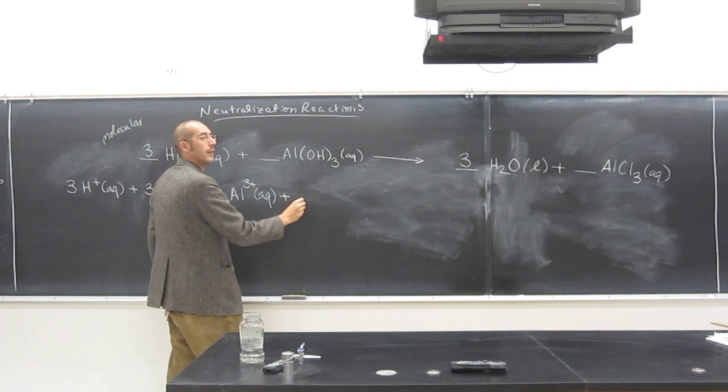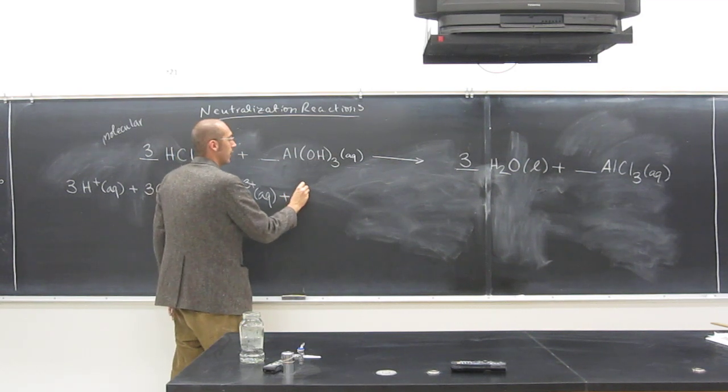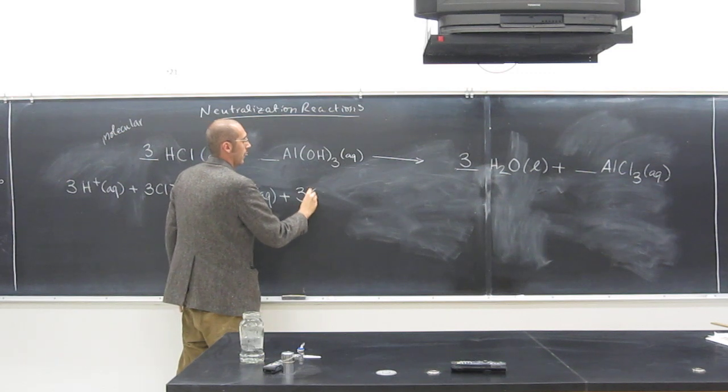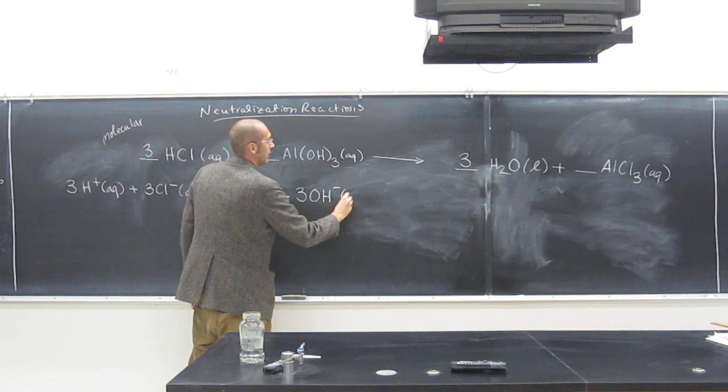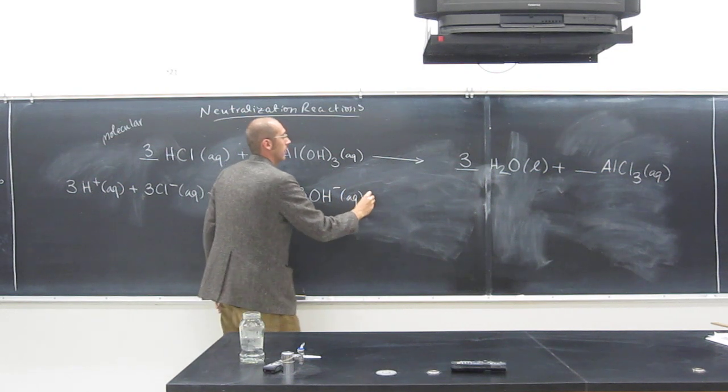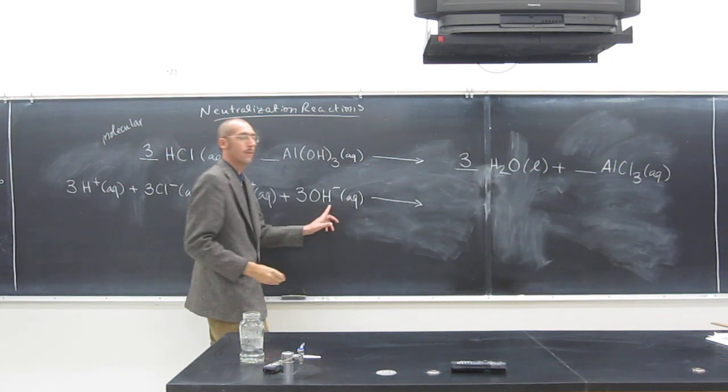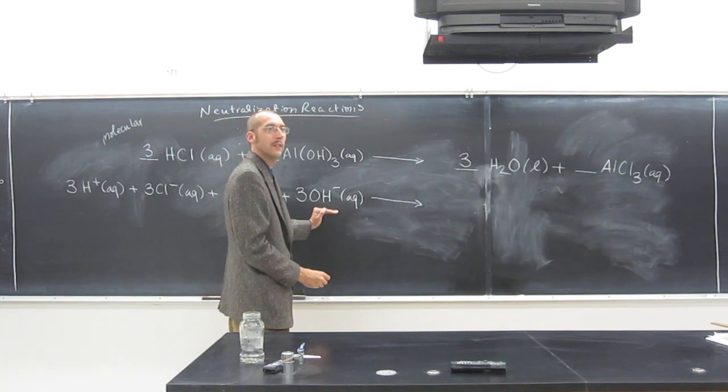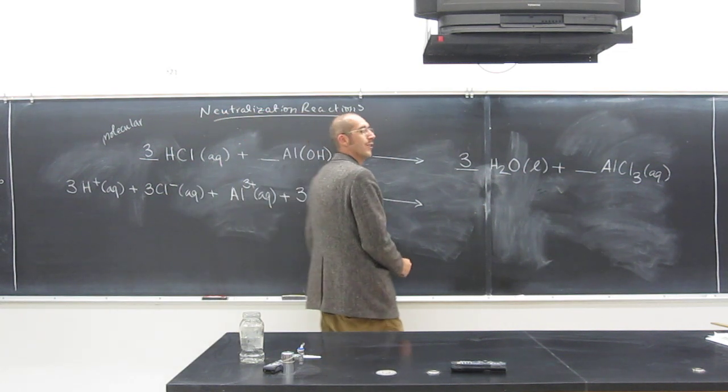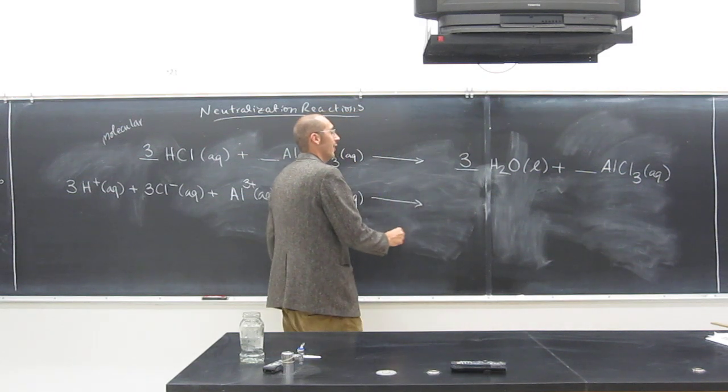How many? 3, what? OH minus, that's it? Minus, right? Aqueous, very good. This OH minus is called the hydroxide ion. It's one of the polyatomics that you need to know, that you do know. By now, I'm sure you do.